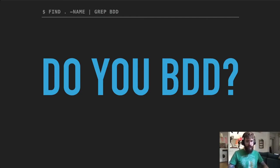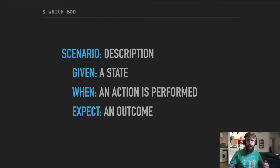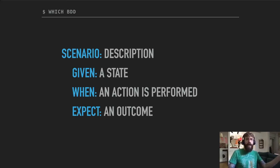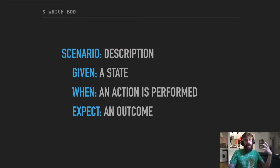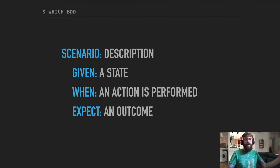A core concept of BDD is the structure: you have a scenario which gives you a human text description of what your problem is or what you are looking to test. Then you have three main keywords you'll see repeating throughout this presentation: Given, When, and Expect. This is the foundation of BDD. The behavior is: given a certain state, you expect that when an action is performed, something else will happen. For example, if a user logs into your system — that's state — when that user clicks on a certain button, you expect something to happen.